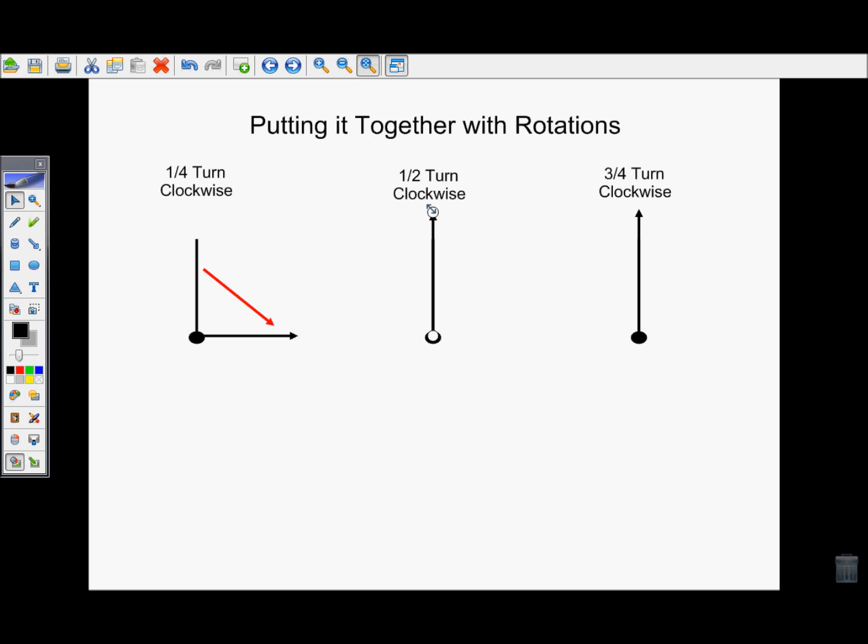We know that clockwise goes from 12 to 1 to 2, and so on. Now that we know which way we're spinning, we need to visualize how far the half turn is. Well, I know that half an hour is 30 minutes, or halfway around the clock would be pointing down here to the 6. So this is what a half turn would look like.